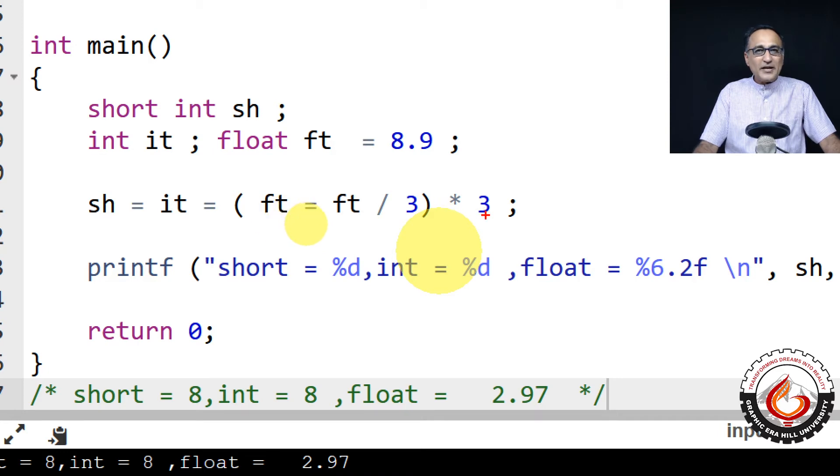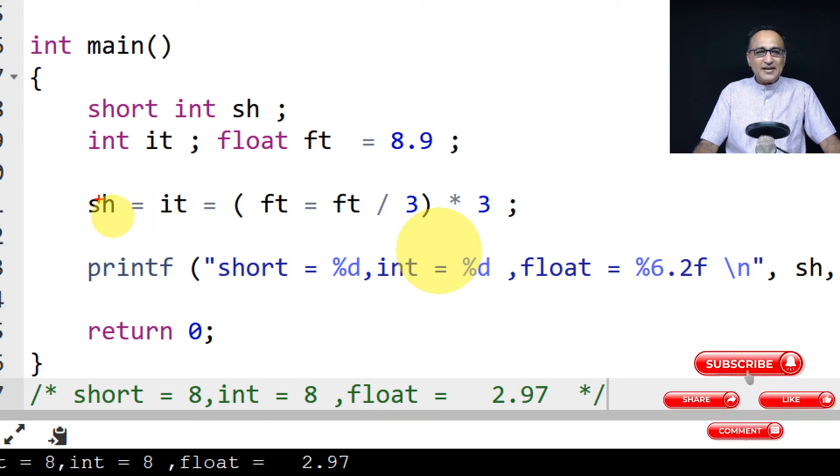So when I multiply it, it's going to be 8.9 something like that. What happens is when I'm assigning it to an integer, the point nine is lost. The integer variable becomes 8, and short also ends up becoming 8.